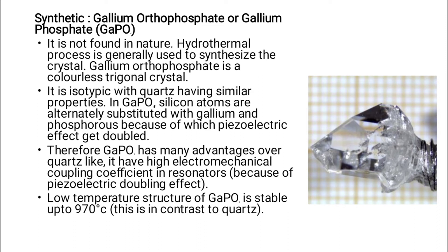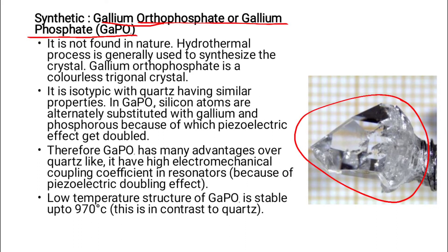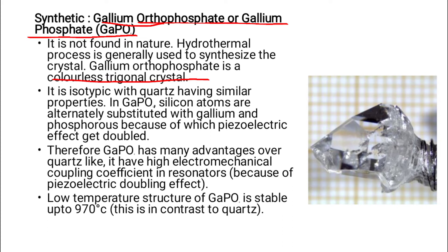A synthetic piezoelectric material is gallium orthophosphate, also called gallium phosphate or GAPO4. It is not found in nature; a hydrothermal process is generally used to synthesize the crystal. It is a colorless trigonal crystal, isomorphic with quartz having similar properties.